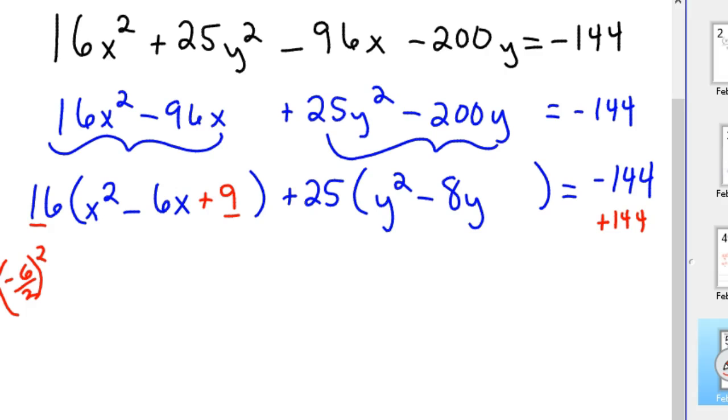Okay, then do the same with 25. So 8, again, negative 8, divided by 2, squared, would be 16. So we're going to add 16 to both sides. I'm going to get rid of these now that I've figured out my numbers. And so you'd add 16 here, but, again, 25 times 16 is 400. So that's what you have to add to the other side to balance the equation.